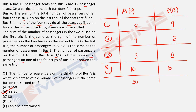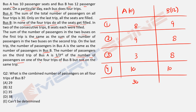Question 2: what is the combined number of passengers on all four trips of Bus B? That's 9 + 8 + 8 + 10 = 35. The answer is option C.